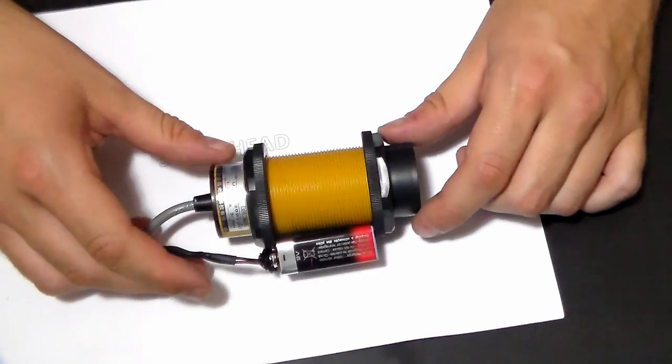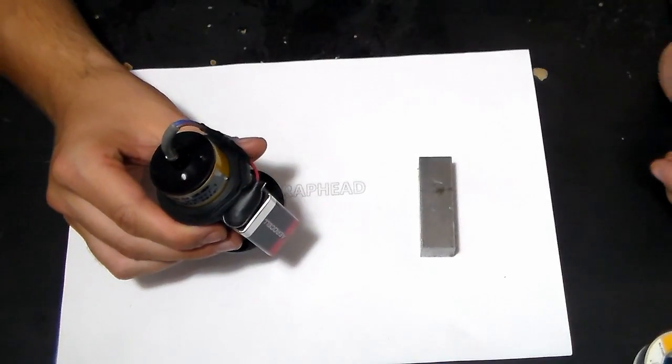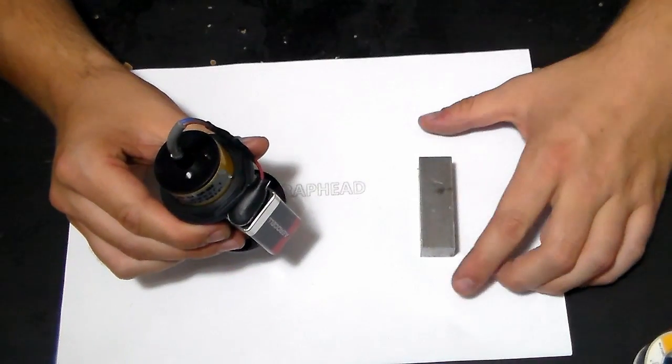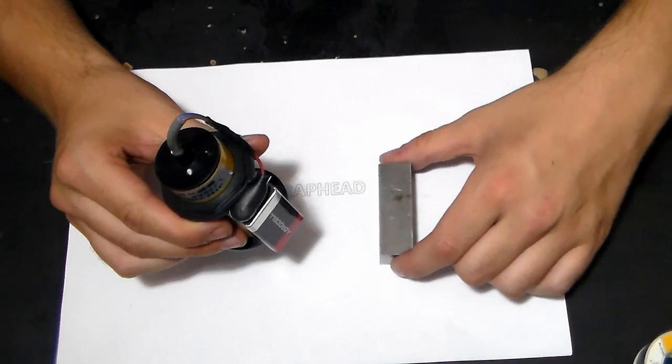We are ready to test! Normally an inductive sensor is used in the industry like this. If there's a metallic object moving towards the sensor,